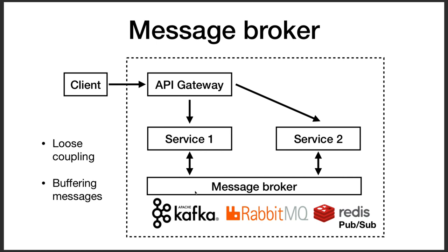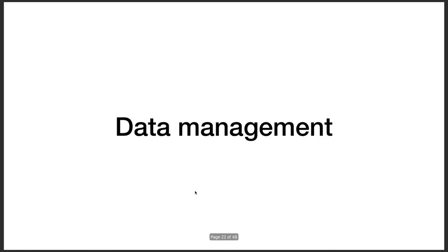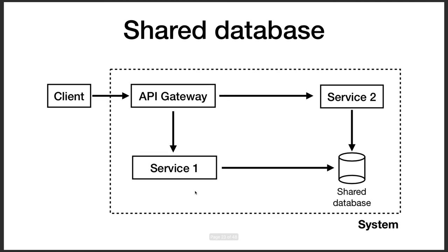With gRPC, HTTP, and Socket.IO you know who your client is. With message brokers like Kafka, RabbitMQ, or Redis Pub/Sub, service 1 publishes an event to the message broker and service 2 listens to it. It can be SQS, Kafka, RabbitMQ, or anything from an infrastructure provider. Once service 1 publishes a message, service 2 reads it — service 1 is not aware of service 2, achieving loose coupling between services.